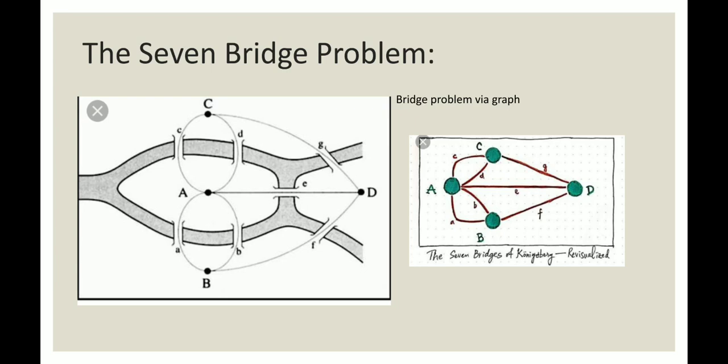For example, if a person is starting in A, he has to complete the circuit in A by going to all the bridges but it was impossible. That can be explained in the graph next to it.